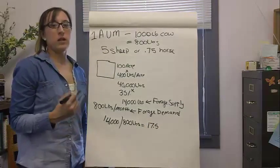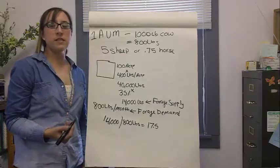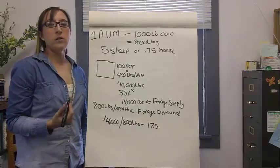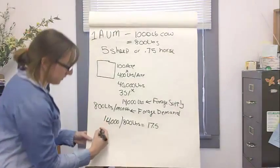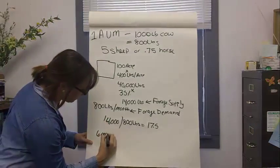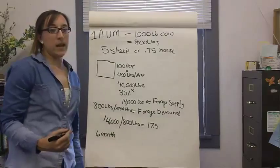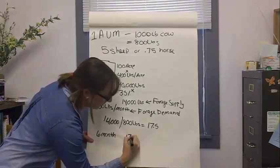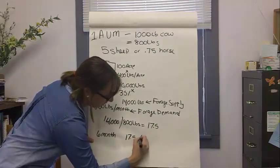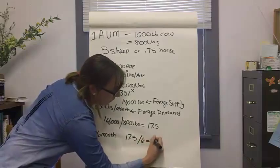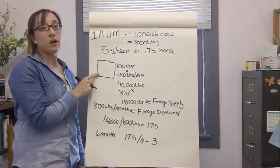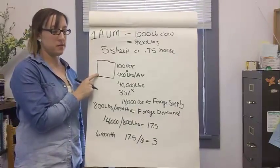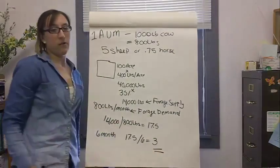This means we can graze one cow for 17.5 months or 17.5 cows for one month. If you would like to graze for six months, we take that 17.5 months divided by six, and we get approximately three cows. We can graze three cows on a 100 acre pasture for six months. This is our stocking rate.